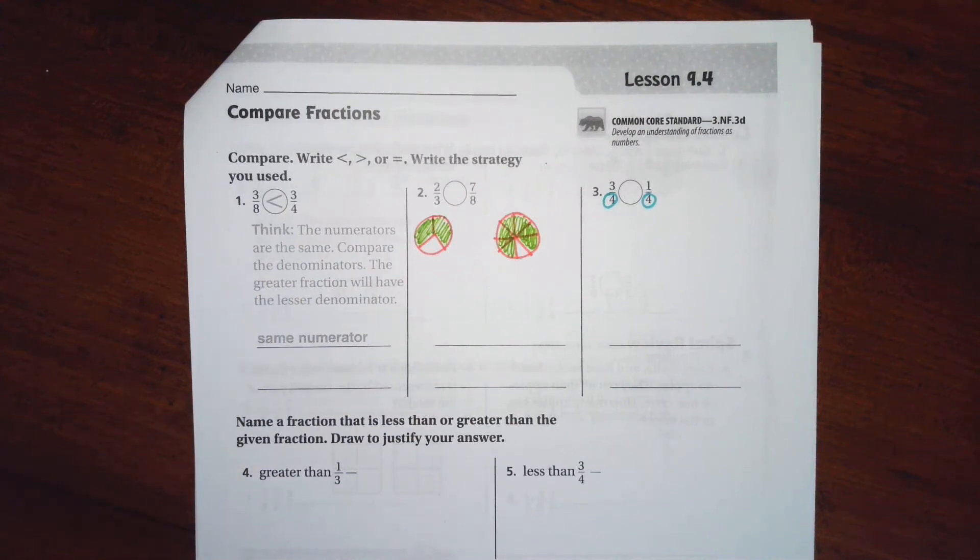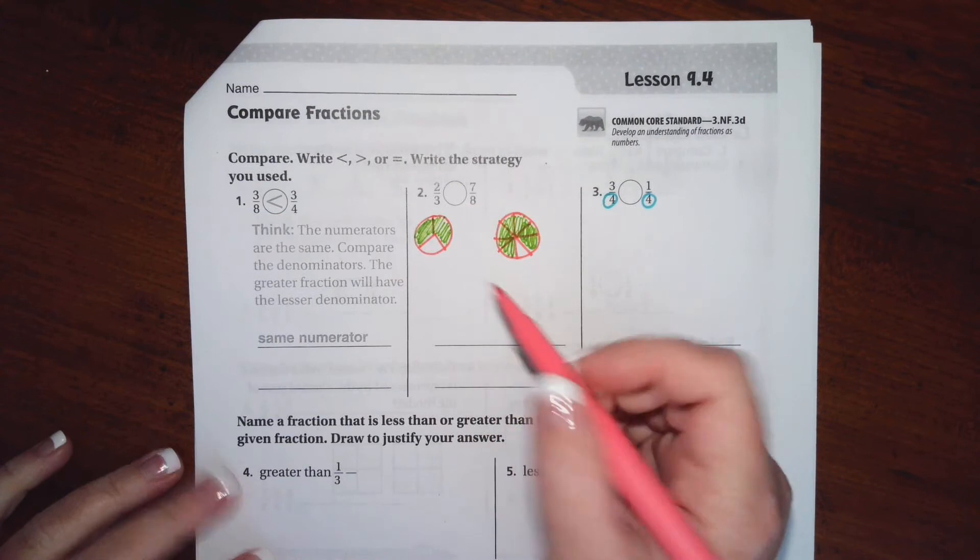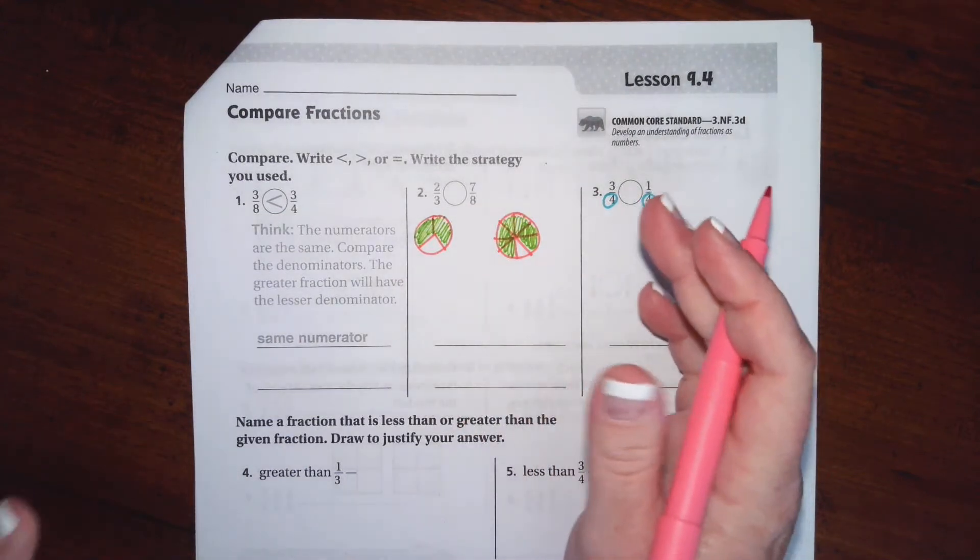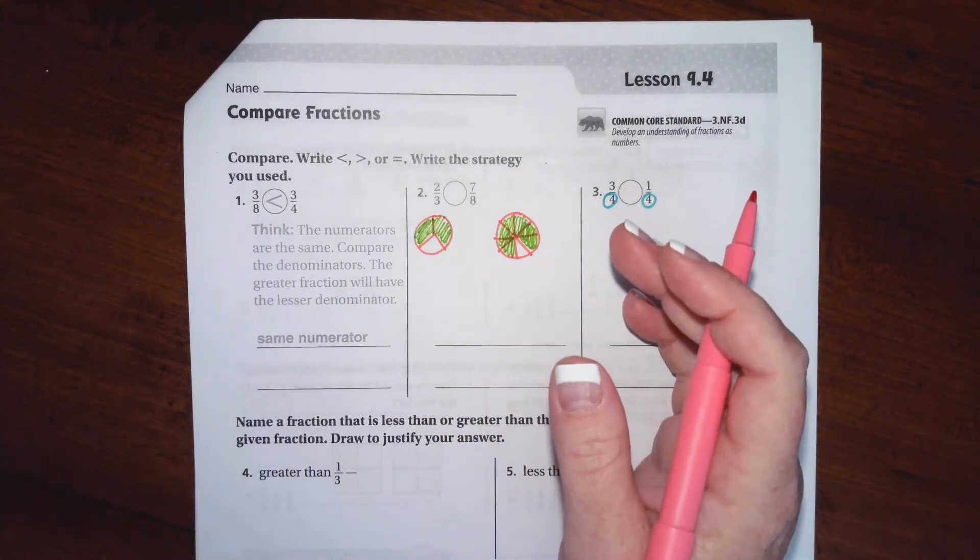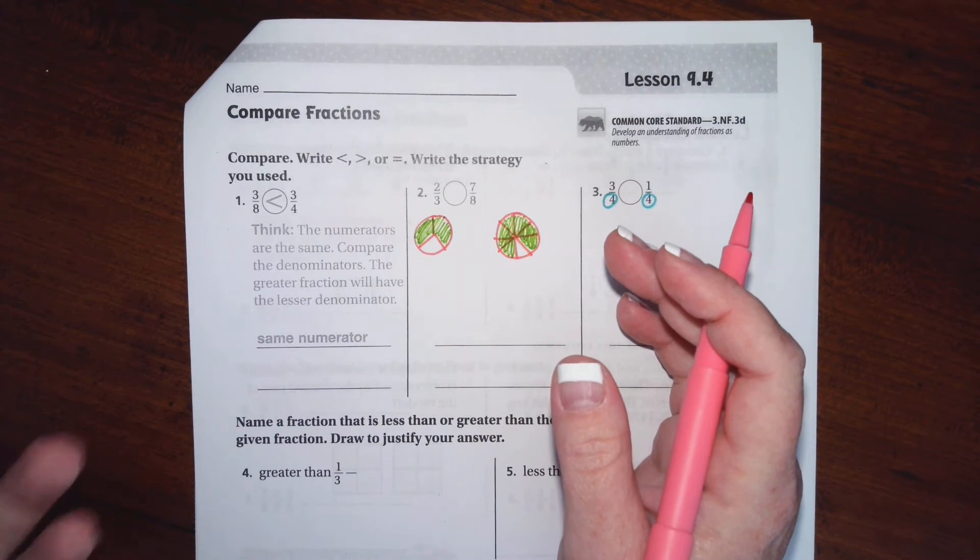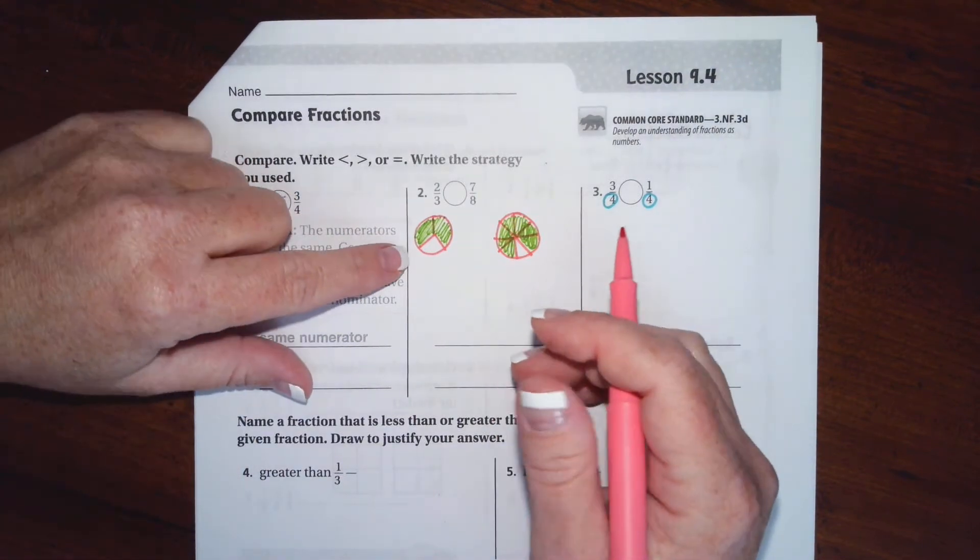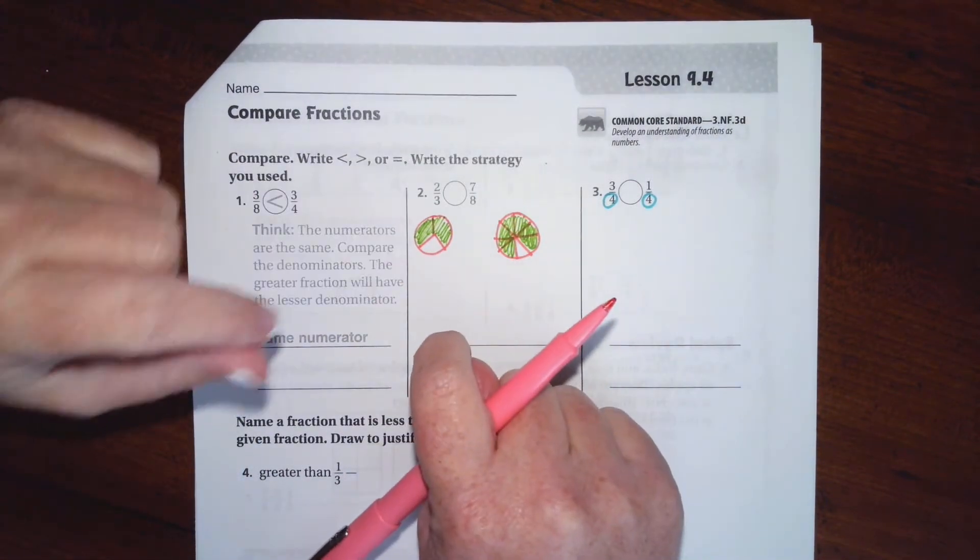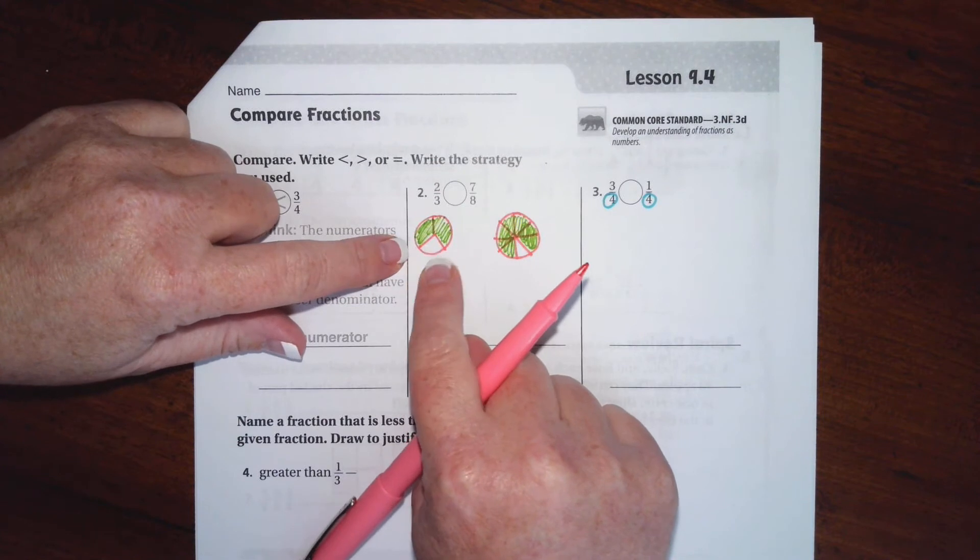Hi guys, welcome to third grade chapter nine lesson four. We're going to get started. Instead of using the butterfly method this time, because of the way they're teaching in the book and the words they're teaching, we're going to do this one just a little bit different.